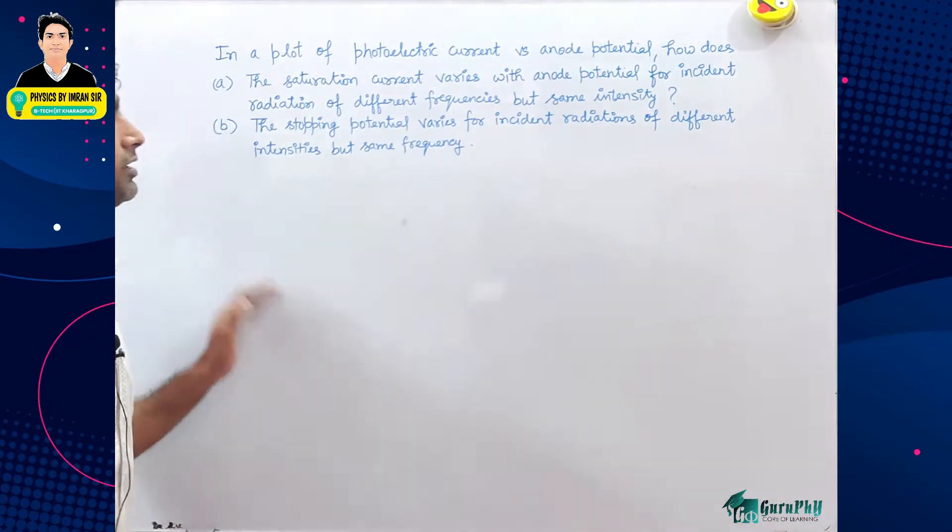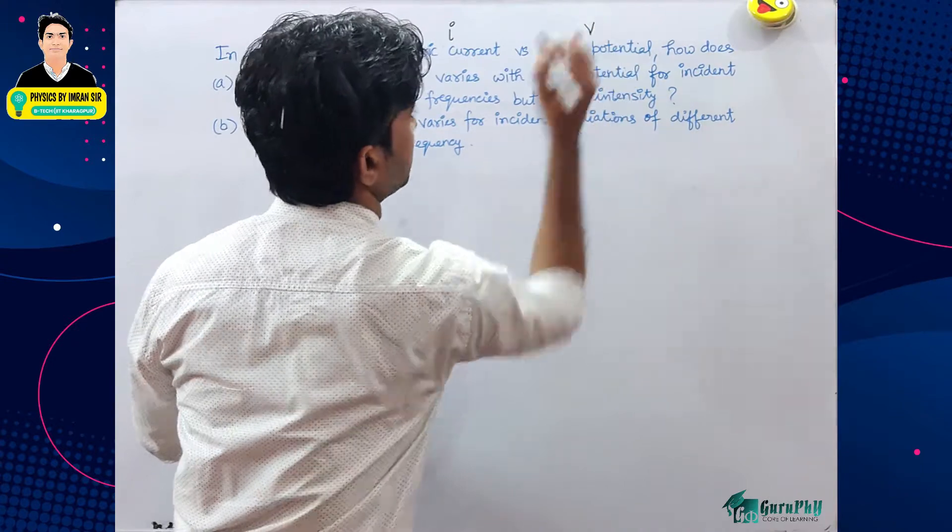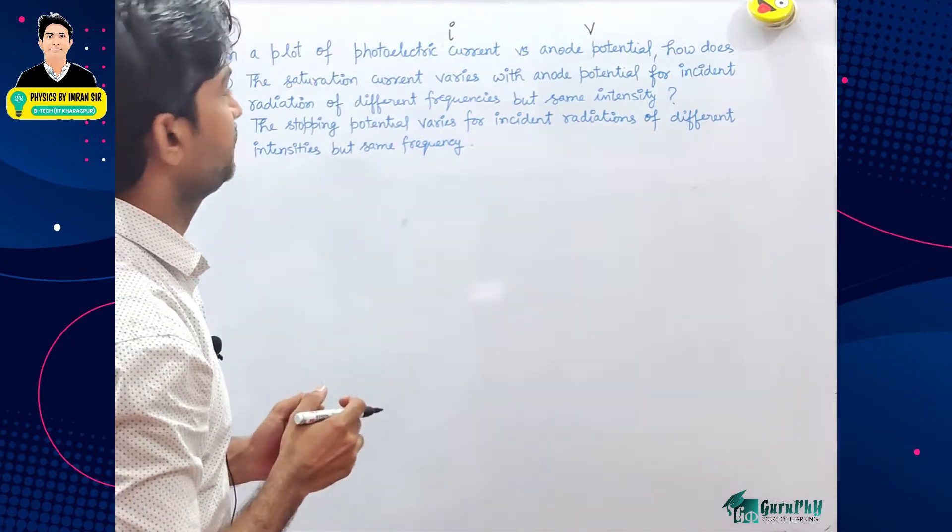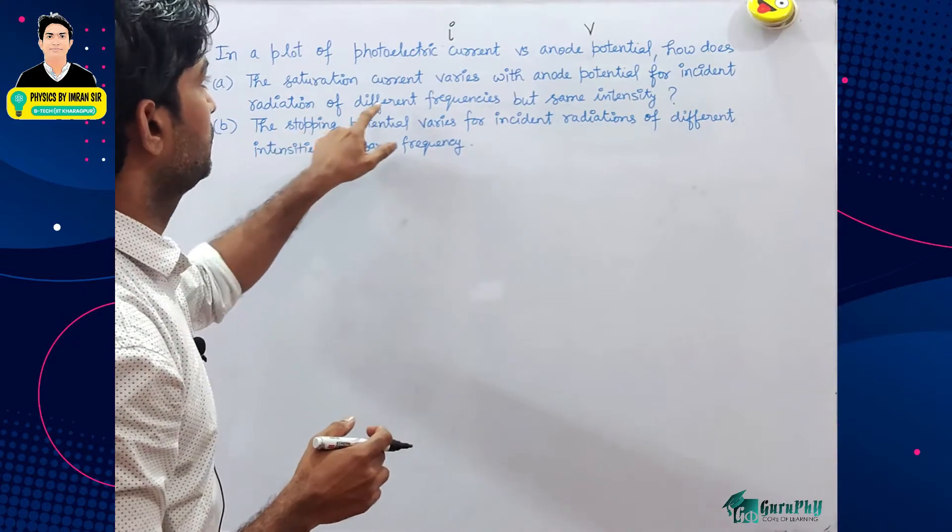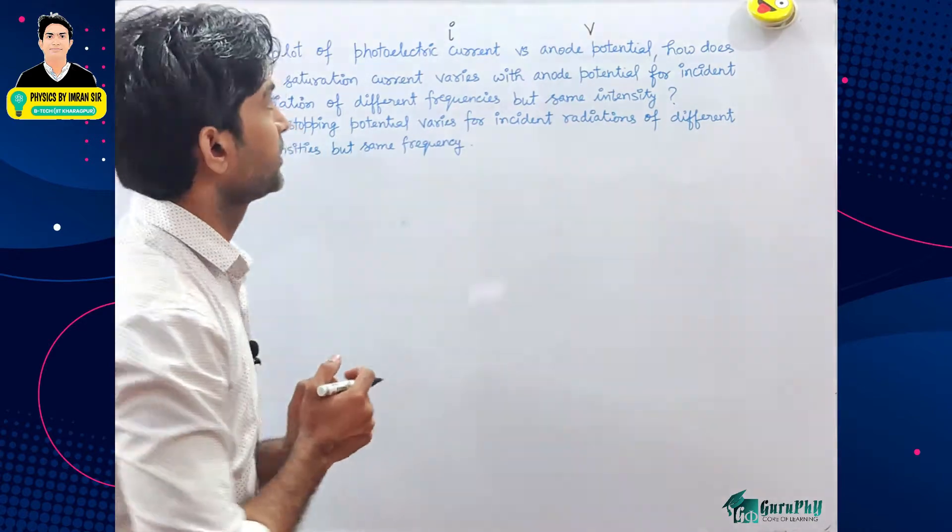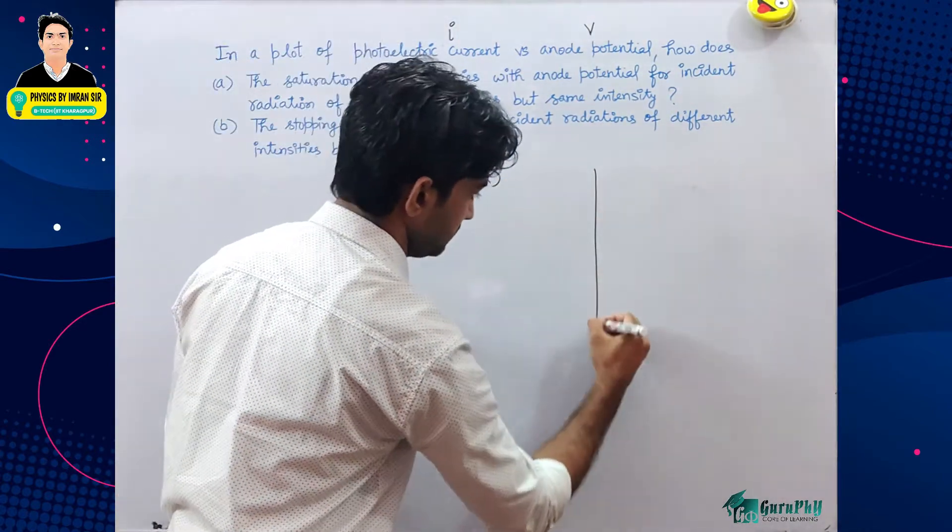In a plot of photoelectric current versus anode potential, how does the saturation current vary with anode potential for incident radiation of different frequencies but the same intensity? So, I versus V ka graph row karna hai - current versus voltage.